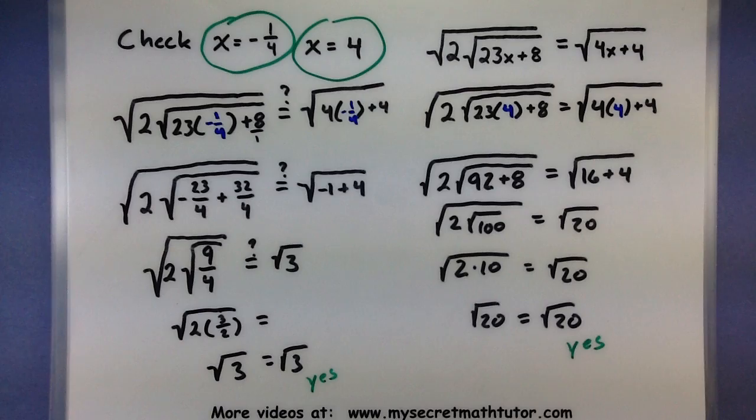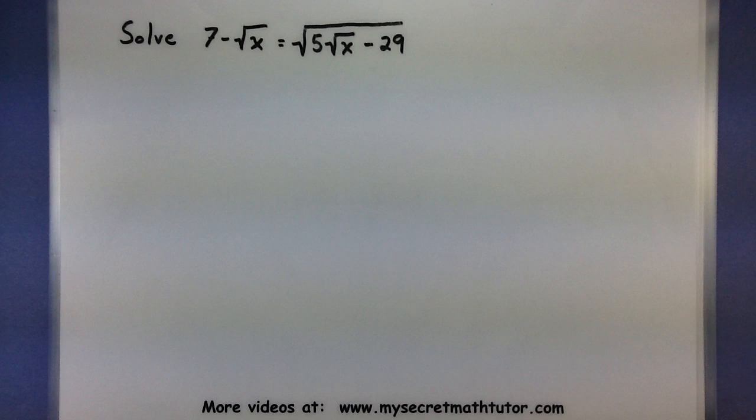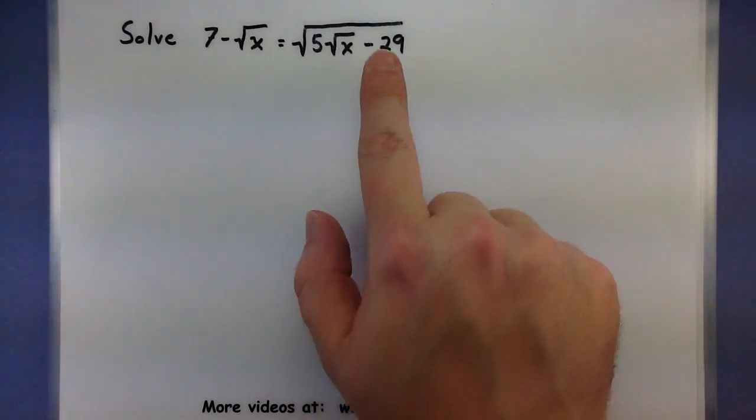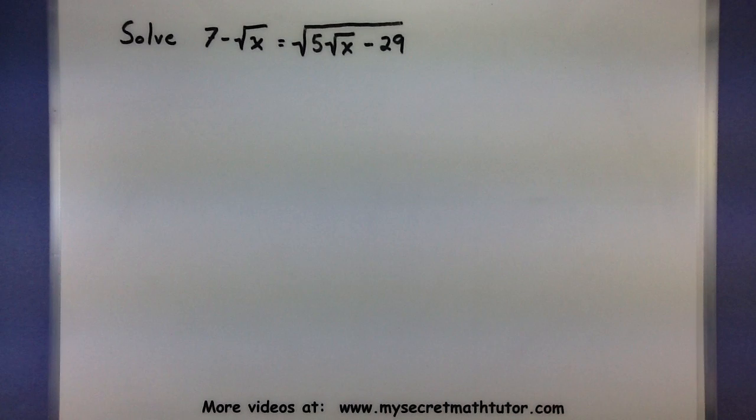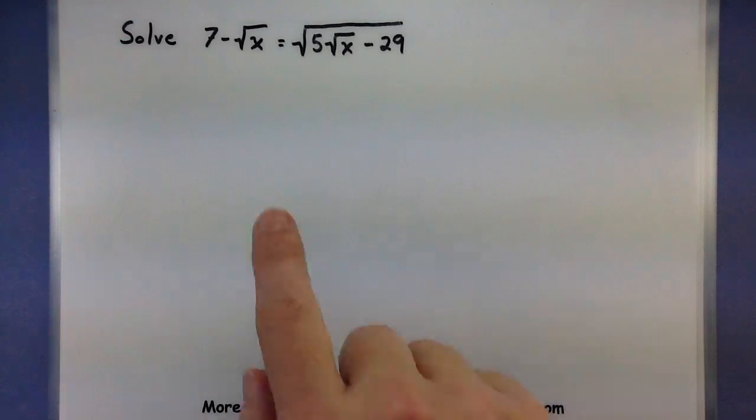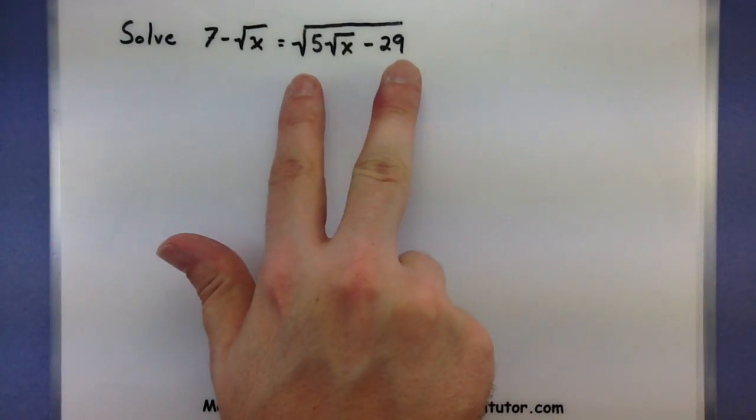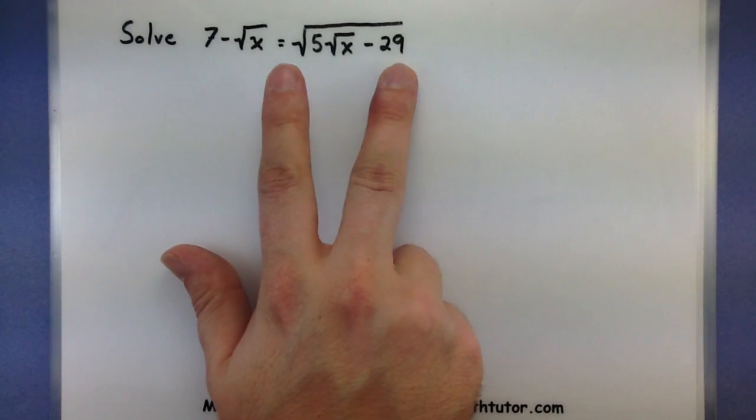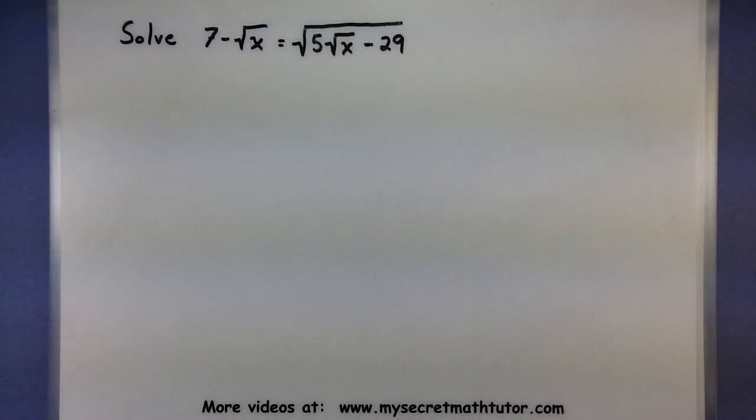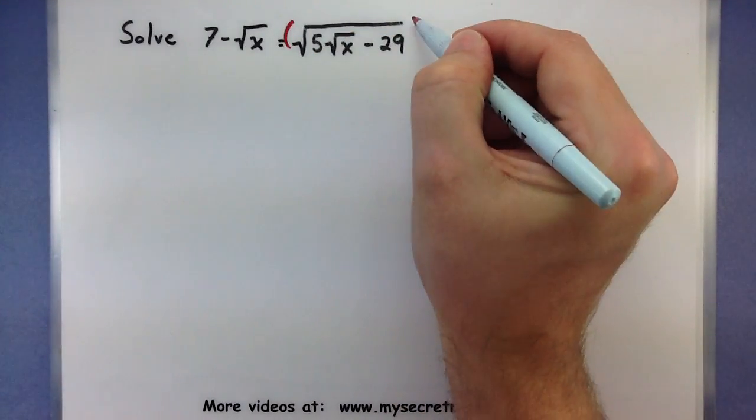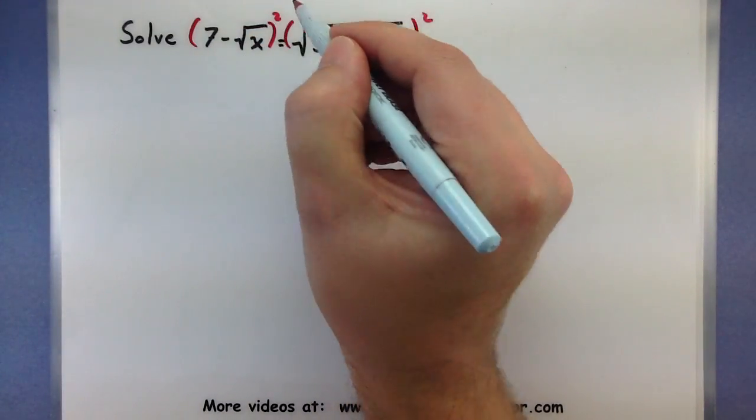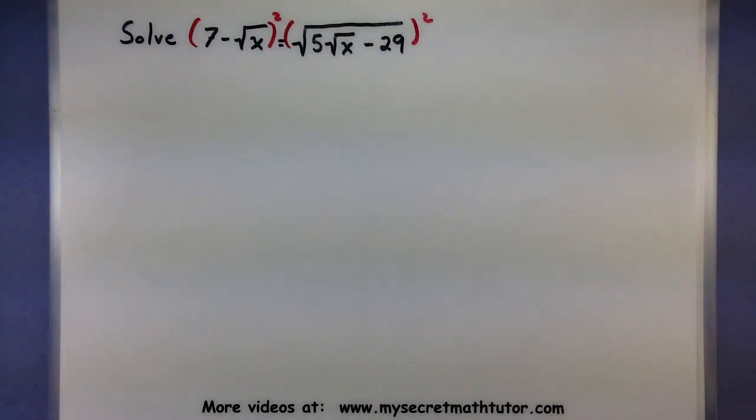In this next one, we want to solve 7 minus the square root of X is equal to the square root of 5 times the square root of X minus 29. A lot of stuff going on over here. That's where we have a root inside of another root. To work on this one, we need to work on isolating a root. And you could isolate this one. But it's actually going to be a lot easier to isolate this one. Because it's already all by itself on the right side. So, let's just begin by squaring both sides. Square over here. Square over here.